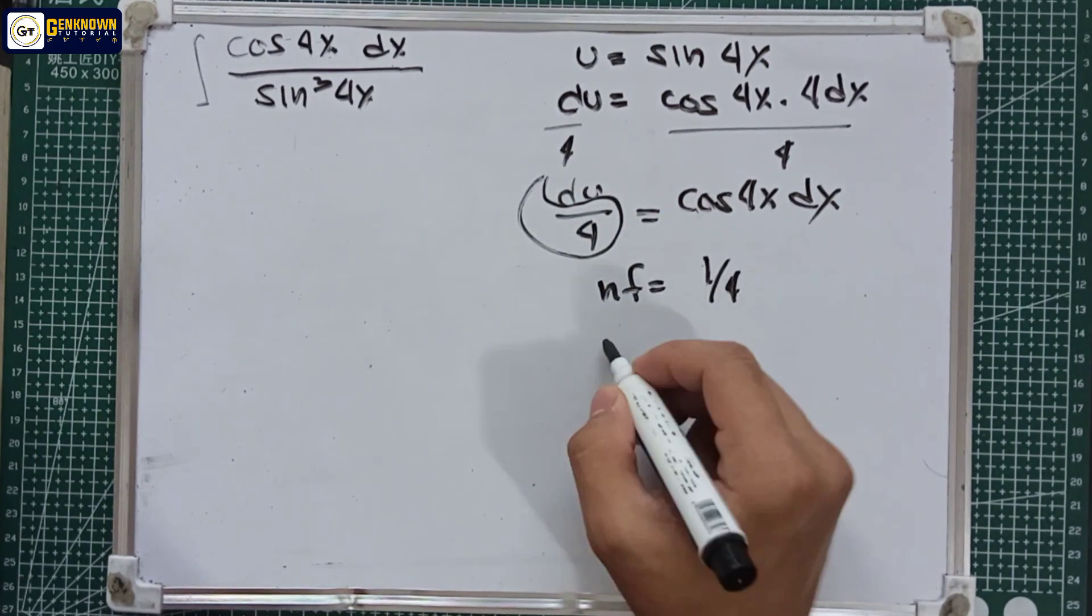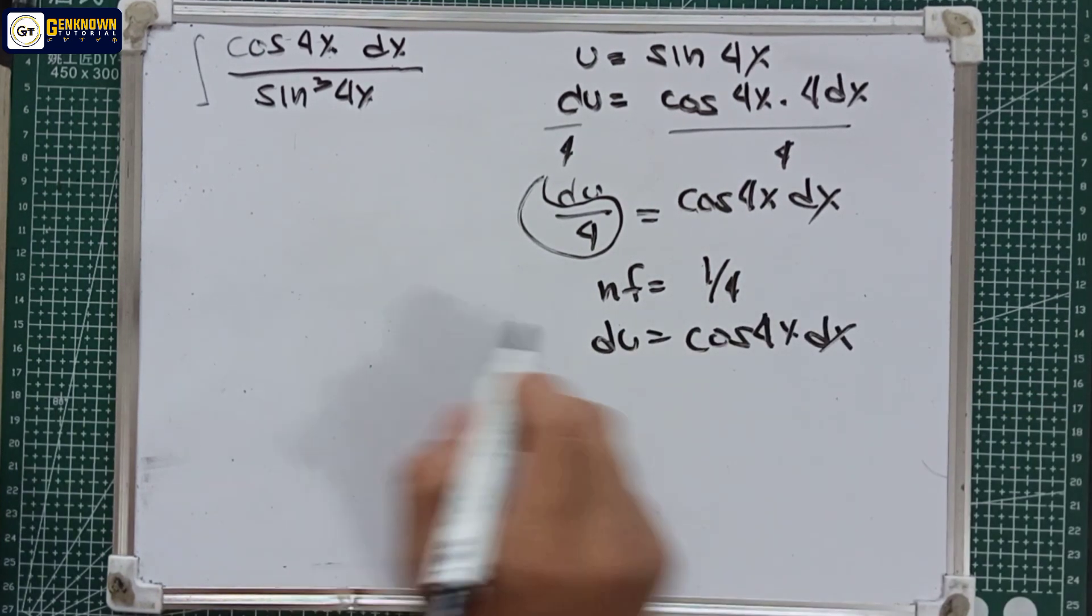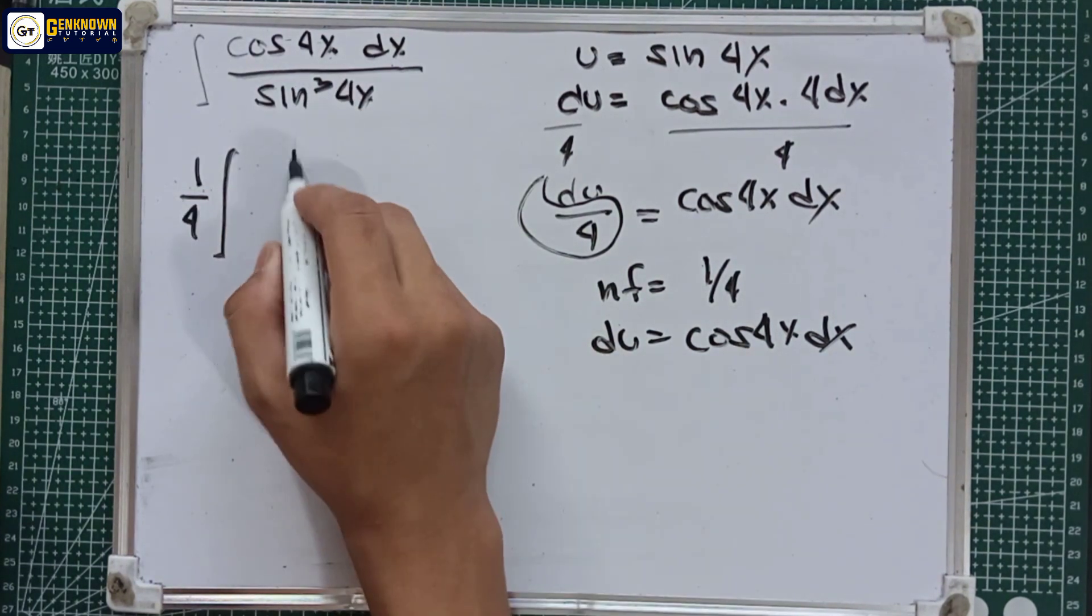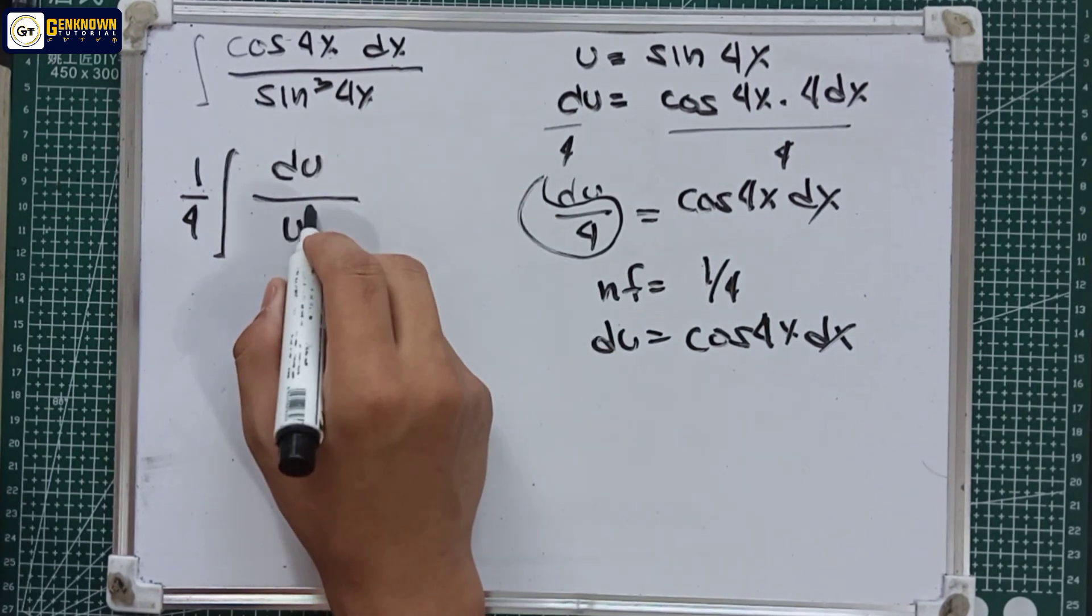Substituting, we have one-fourth times the integral of cosine 4x dx, which becomes du over sine cubed 4x, or u raised to the third power.